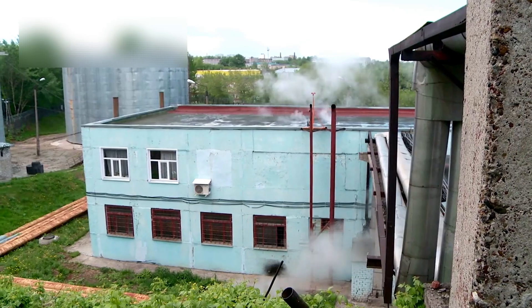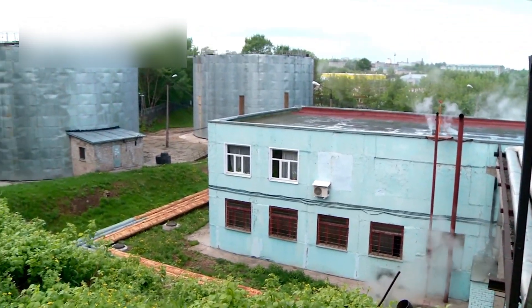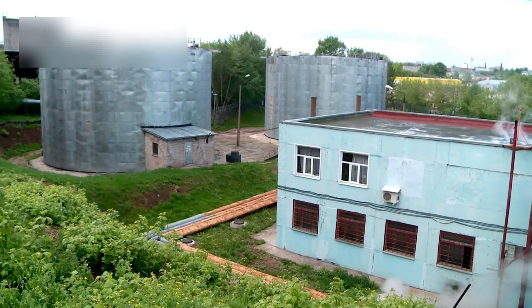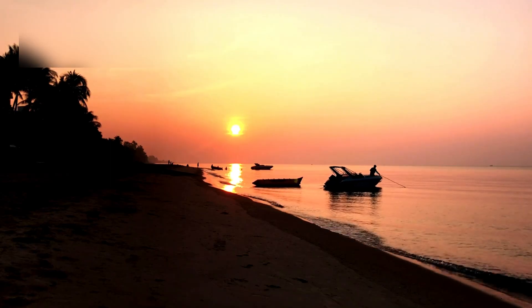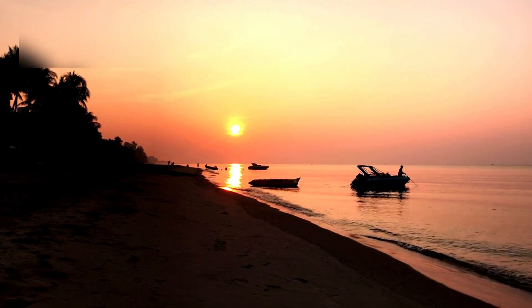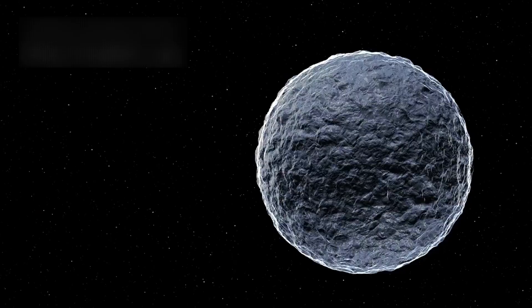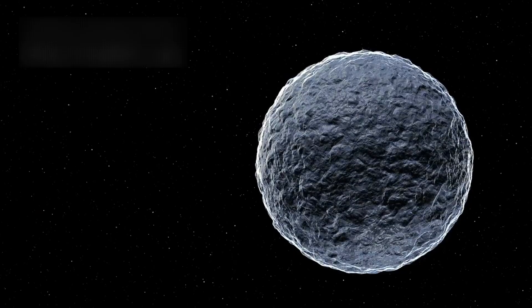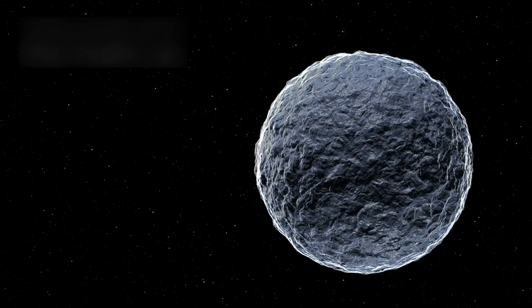Despite Pluto's great distance from the Sun, such internal heating could maintain liquid reservoirs, preventing complete freezing of its interior. The existence of subsurface oceans elsewhere in the solar system, such as beneath the ice of Europa and Enceladus, provides strong precedent. If Pluto too harbors liquid water, it would represent yet another potential habitat in a region once dismissed as sterile.